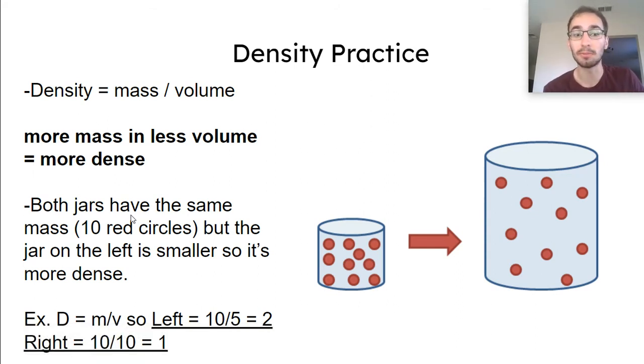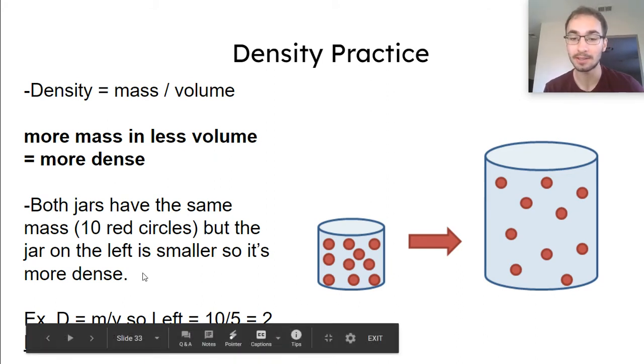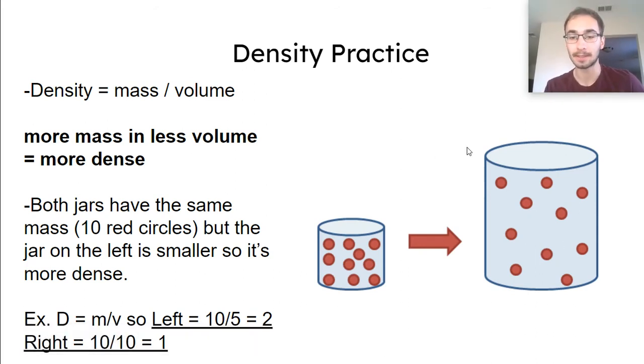And you can also use the formula to do it too. If you think both of them have the same mass of 10. But the one on the left, its volume is 5. So the density would be 2. But the volume on the right, its mass is 10. But the volume is 10. So the density would be 1. So this jar is about twice as dense as this one. You would be doing more of that in physics.